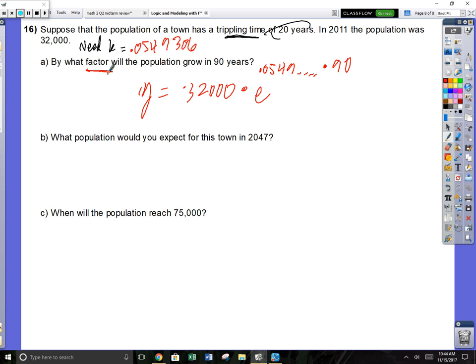This question, by what factor, it doesn't want to know what the population is going to be in 90 years. It wants to know, what are you going to times 32 grand by? If you do e to the 90k, you are going to get 140.29.